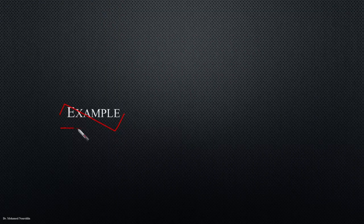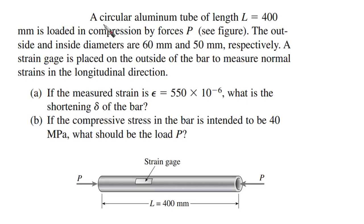Okay, another example. We have a circular aluminum tube, as you can see, with length of 400 millimeters loaded in compression by forces P. As you can see here, we have forces being applied from each side, P here and here.